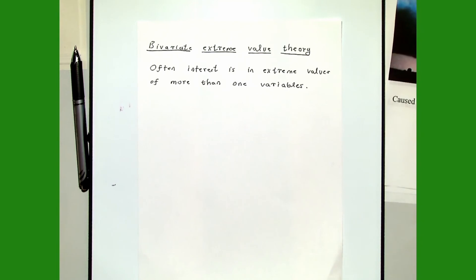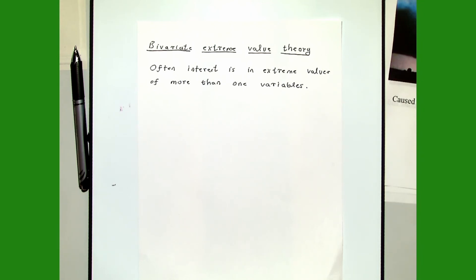The question is how to model them. Before we can start talking about modeling bivariate or trivariate extreme values, we need to find a way to define them. In the univariate case I gave you three definitions, but in the bivariate case, how do you define the extreme value? That's what I will talk about in the next video.